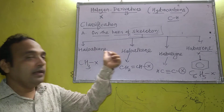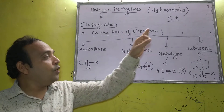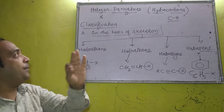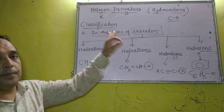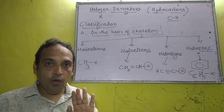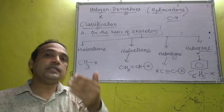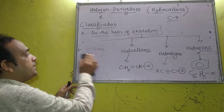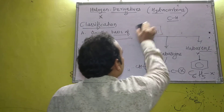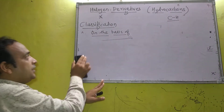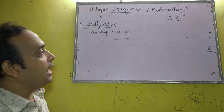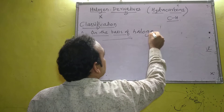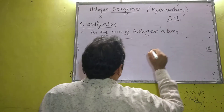This is the first classification on the basis of skeleton: haloalkane, haloalkene, haloalkyne, and haloarene. Now we move to the second classification — classification on the basis of halogen atoms present.